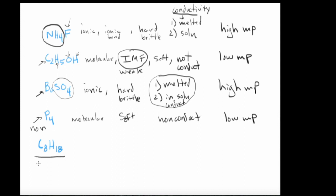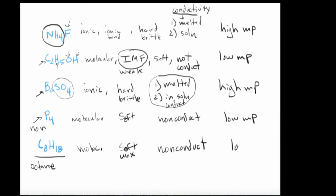C₁₈H₁₈ — this is actually octane, you should know that. This is going to be molecular. In the solid form it's going to be a soft material, like a wax. It's going to be non-conductive and it's going to have a low melting point.